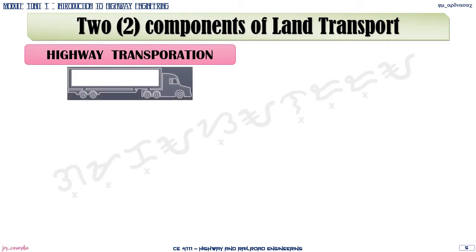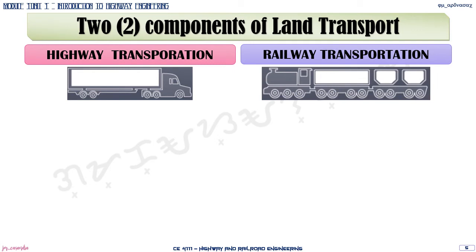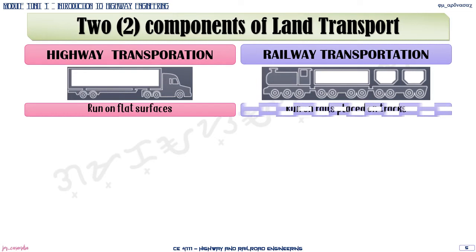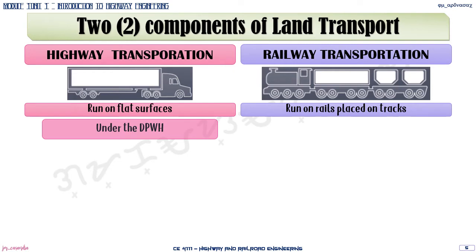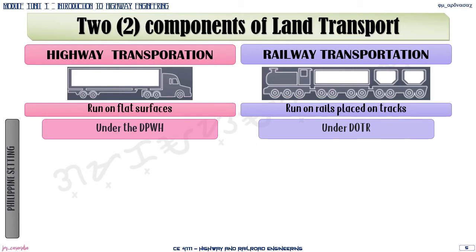When we talk about land transportation, there are two components: highway transportation and railway transportation. Highway transportation involves vehicles that run on flat surfaces, while rail transportation involves vehicles that run on rails placed on tracks. Both involve wheeled vehicles — the only difference is what they run on. In the Philippine setting, highway transportation is controlled, monitored, and maintained under the Department of Public Works and Highways (DPWH), while the railway transportation system is under the Department of Transportation (DOTR).